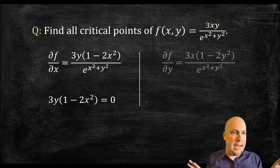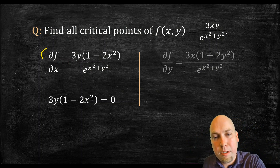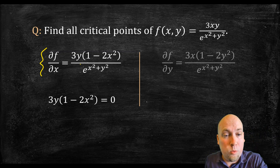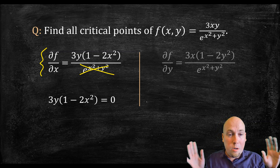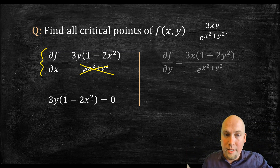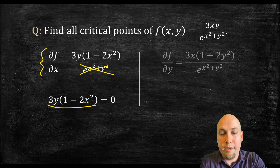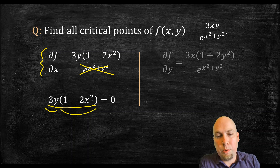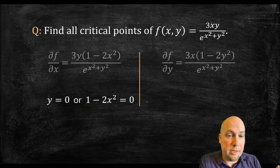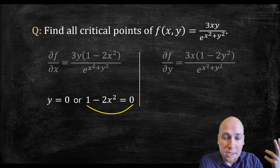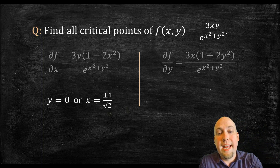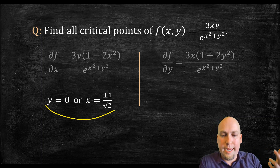I'll focus on one partial derivative at a time and combine answers at the end. Starting with the partial derivative with respect to x set equal to zero: to set a fraction equal to zero, just set the numerator equal to zero — the e to the x squared plus y squared in the denominator has no effect. So the x partial equals zero if and only if the numerator equals zero. Because it's factored, either 3y = 0 or 1 − 2x squared = 0. Solving the second gives x = ±1/√2. So the x partial equals zero when y = 0 or x = ±1/√2.